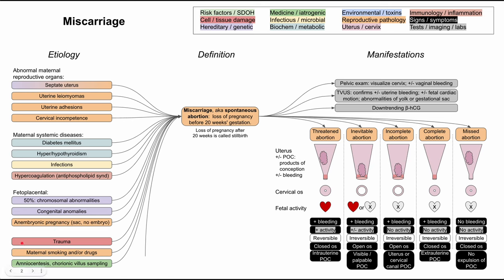A few miscellaneous causes of miscarriage include trauma, maternal smoking and/or drug use, and iatrogenic procedures like chorionic villus sampling and amniocentesis — though these are performed less frequently now because they can cause miscarriage. Unfortunately, many miscarriages happen and we don't know why, so another important category worth mentioning is idiopathic or unknown causes.